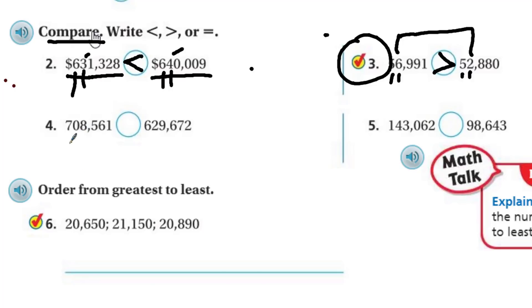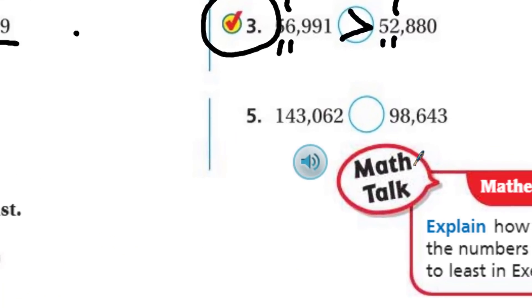Number three. We have 56,991. I think that little check mark there means this is a crucial one. And then we have 52,880. Again, comparing the fives, you can see the six in the thousandth place is cool. The two in the thousandth place is pretty cool, too. But the two and the six, that's what's going to decide that one. And the six wins.